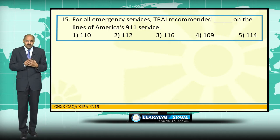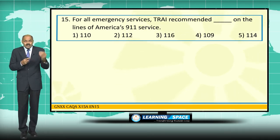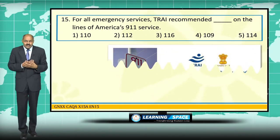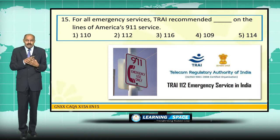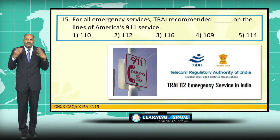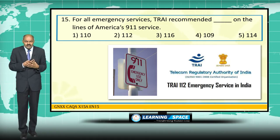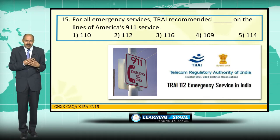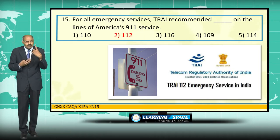TRAI, the Telecom Regulatory Authority of India, recommended one emergency phone number for all services. In the United States, all emergencies use the single number 911. TRAI recommended the number 112 for India to cover all services like police (100), fire (101), and ambulance (102/108), on the lines of the US 911 system.